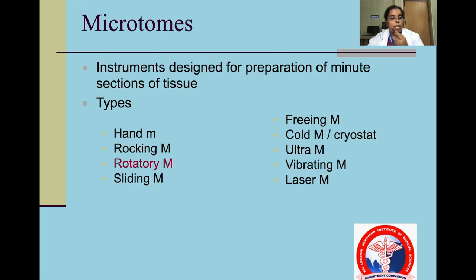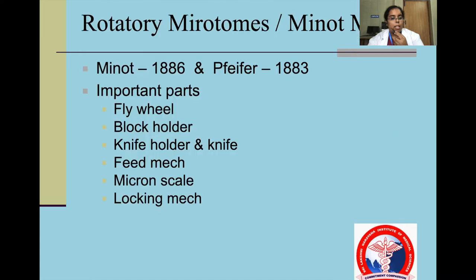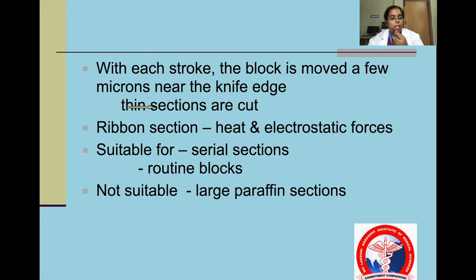Microtomes are designed for preparation of minute sections of tissue. Types include hand, rocking, rotary and sliding. In a rotary microtome, the important parts are a flywheel, block holder, knife holder, feed mechanism, micron scale and locking mechanism. With each stroke the block is moved a few microns near the knife edge to give a thin section. Ribbon sections form because of heat and electrostatic forces. These are suitable for serial sections and routine blocks but not suitable for large paraffin sections.